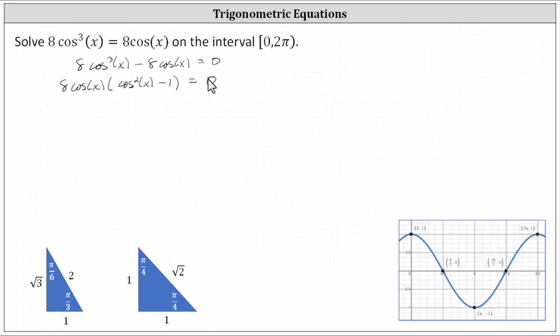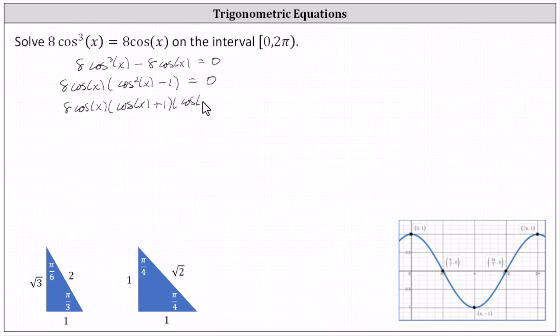This gives us eight cosine x times the quantity cosine squared x minus one equals zero. Notice cosine squared x minus one is a difference of squares, and factoring further, we have eight cosine x times the quantity cosine x plus one times the quantity cosine x minus one equals zero.